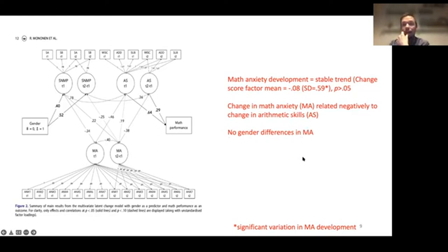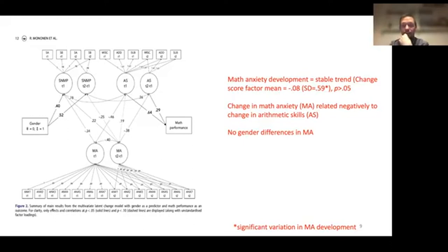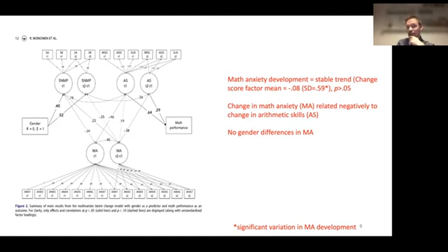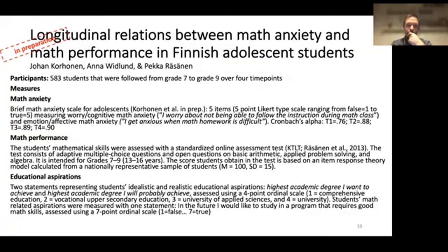We also did not find gender differences in math anxiety, which aligns with the literature — studies with younger children typically do not find gender differences, but as children get older, girls tend to report more math anxiety. In this study with grade one and two students, we couldn't clearly determine whether results supported the debilitating anxiety model, the deficit model, or the reciprocal model — we saw that development in both performance and anxiety were related, but could not determine which was driving the other.